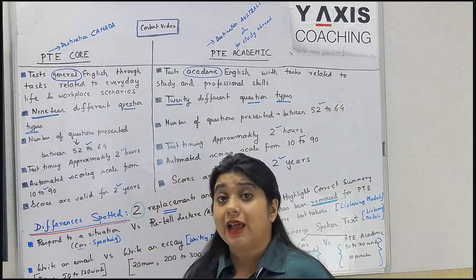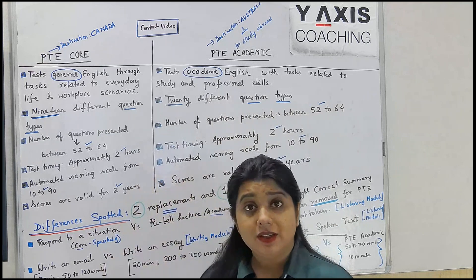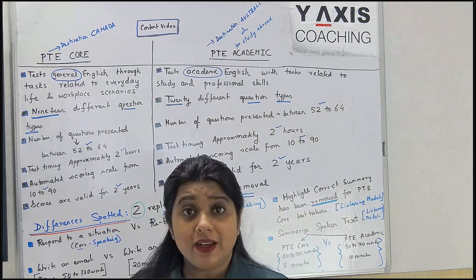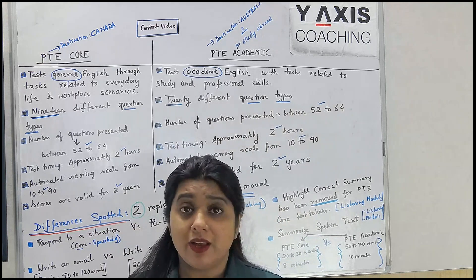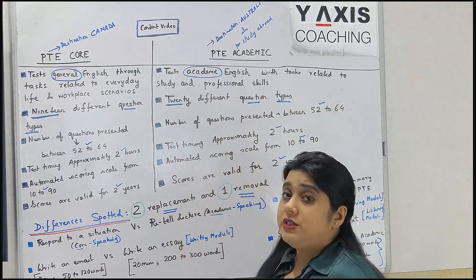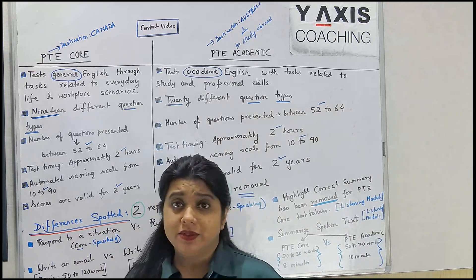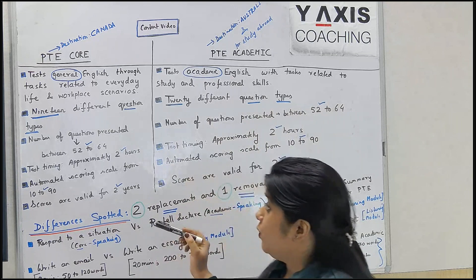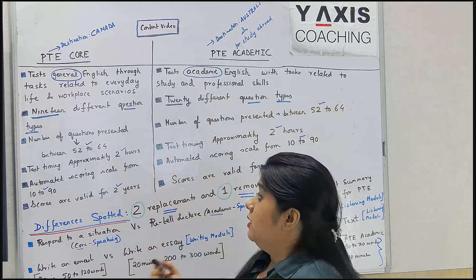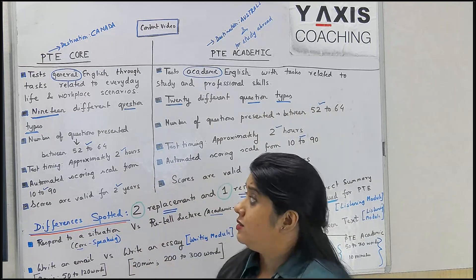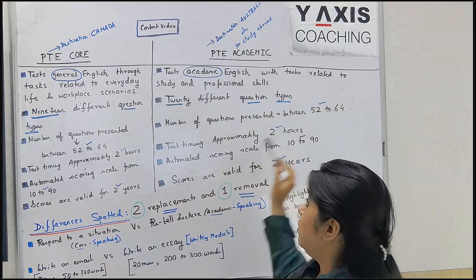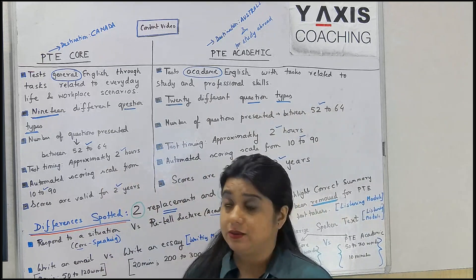PT Core has 19 task types because one task type has been removed - 'highlight correct summary.' On the other hand, PT Academic test takers have to take care of 20 different task types. The number of questions presented will be anything between 52 to 64 for both PT Core and PT Academic.